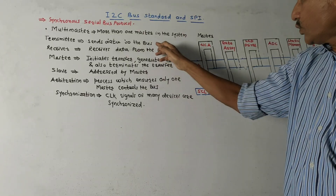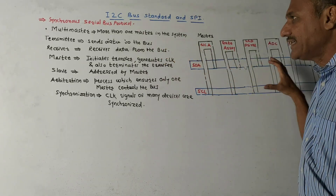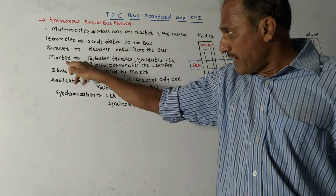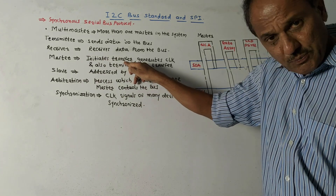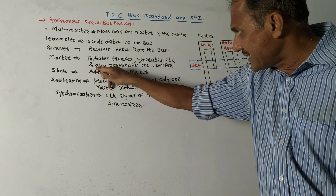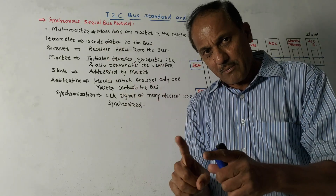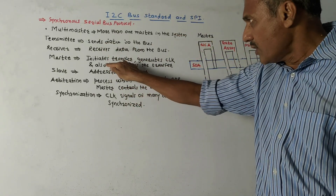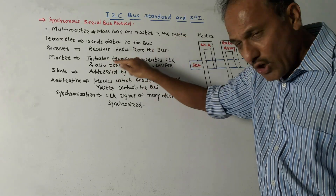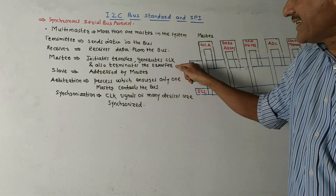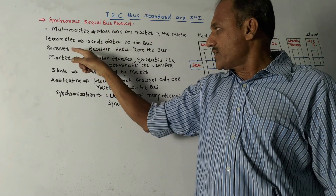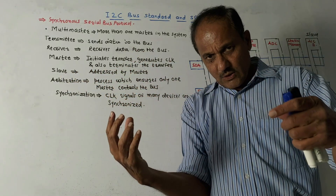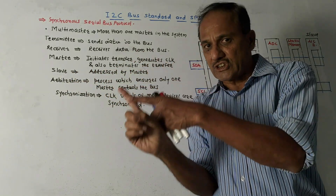The bus is the medium through which data travels. Receiver receives data from the bus. Master initiates transfer, generates the clock signal, and is also responsible for terminating the transmission. So beginning, generating clock, and terminating the transfer are all controlled by the master device. Slave is the device which is addressed by the master device.